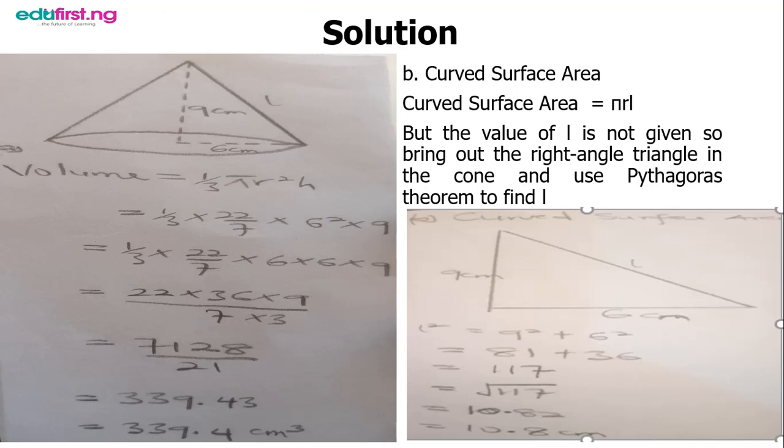I have 22/7 times my r, the base radius, which is 6 centimeters, so I have 6 squared here. My height is 9 centimeters, so I'll put the 9 in.